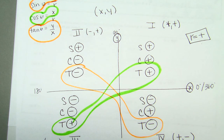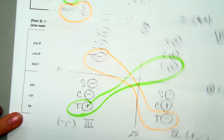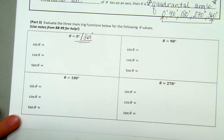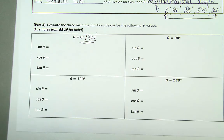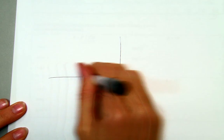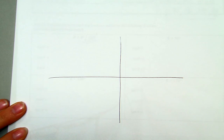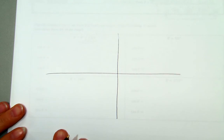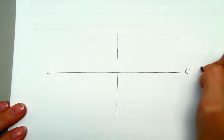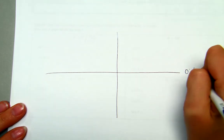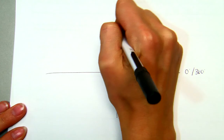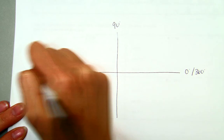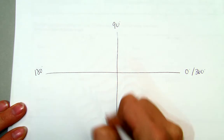Moving on to the quadrantal angles, I'm going to draw my x and y coordinate plane again. Starting off with 0 and 360 degrees, then 90 degrees, 180 degrees, and 270 degrees.